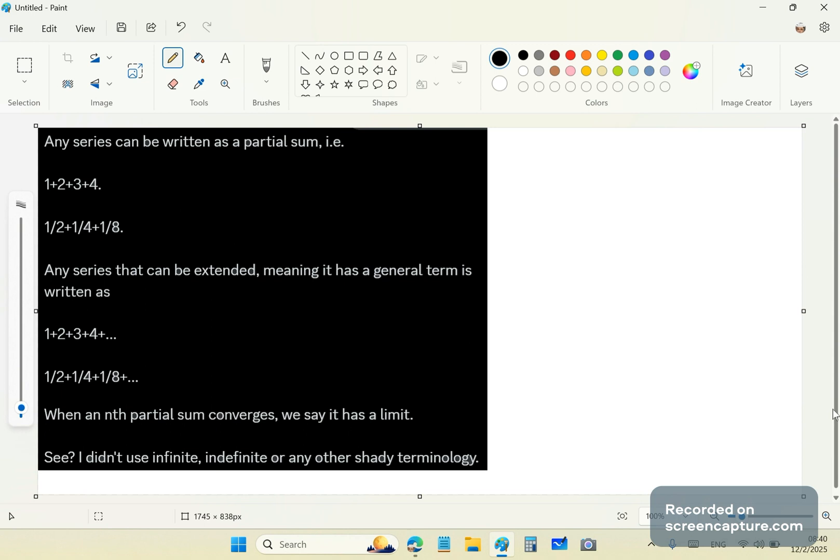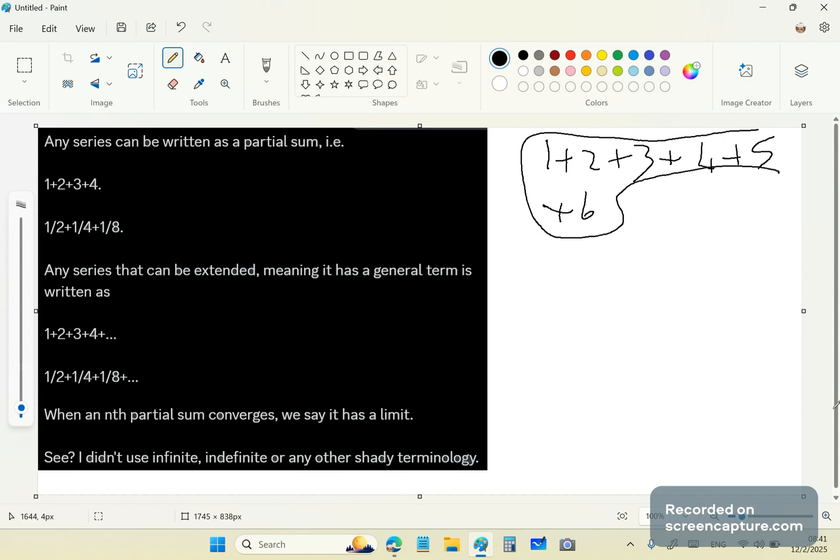1 plus 2 plus 3 plus 4 is a series, and it can be written as a partial sum. That 1 plus 2 plus 3 plus 4 is a partial sum. Another partial sum is plus 5. Another one is plus 6. We don't say this is anything more than a series.